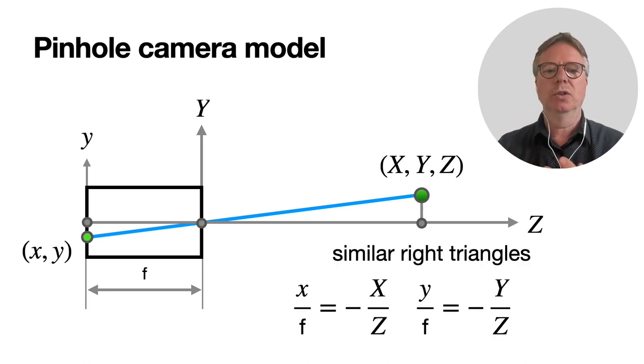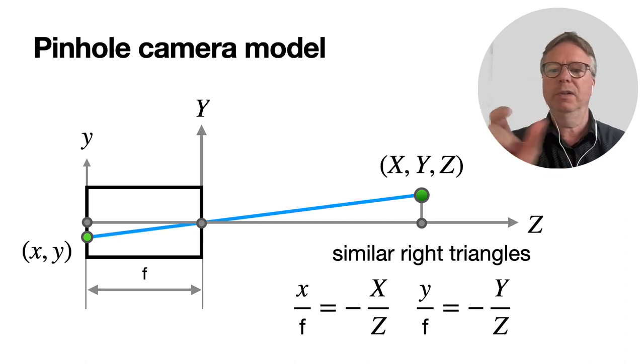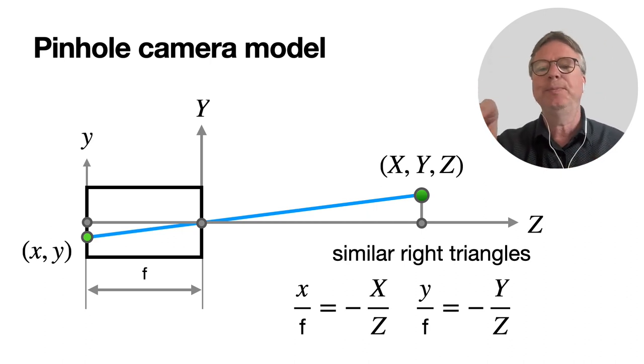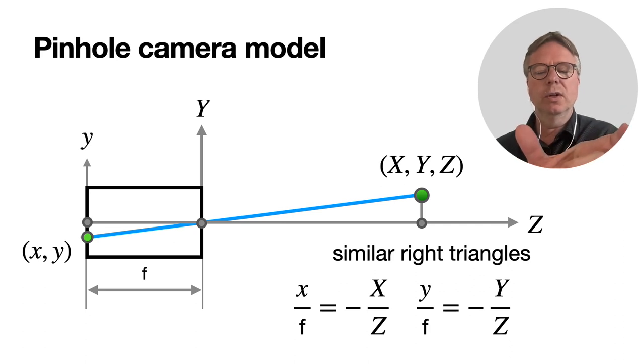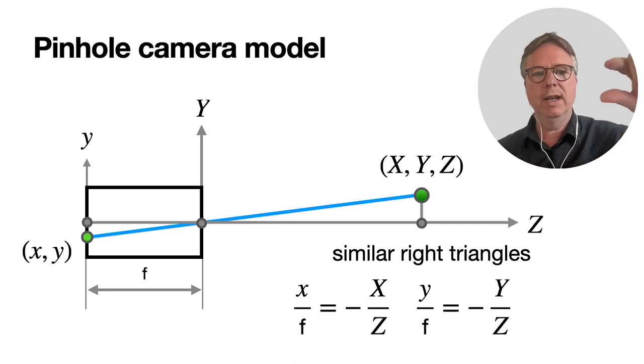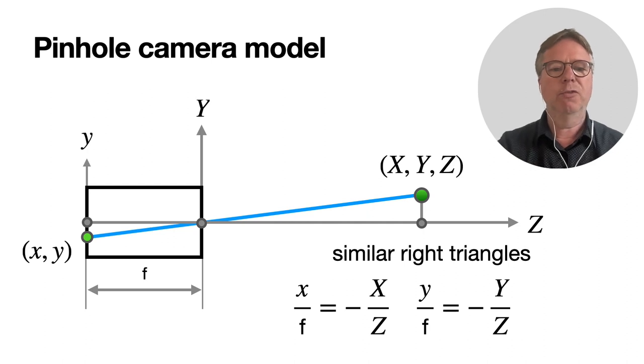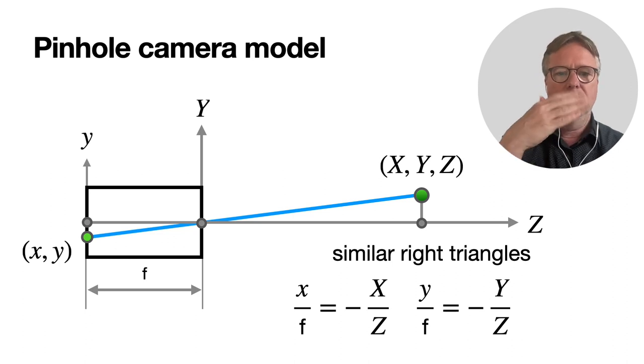Now we can do some algebra. Look at the two right triangles. On the left in the box, you see the triangle with three points, and then it has width F and height Y, or minus Y. So that's a triangle, and the similar triangle on the right is formed by the Z coordinates, the Z length, and the Y length. Then look at the formula on the right. We can say that small y over F is equal to big Y over Z, and then there's a minus sign because of the negative small y image coordinates. We can do the same thing for X, and then we get the formula on the left.